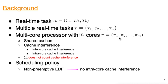A real-time task executing on a multi-core processor with shared caches exhibits two kinds of cache interference. The first is inter-core cache interference, which happens when multiple tasks execute concurrently on different cores accessing the shared cache. The second is intra-core cache interference, which occurs when a task is preempted and its data in the cache is evicted by a newly scheduled task. In our task model, the worst-case execution time does not include cache interference. We consider non-preemptive EDF as the scheduling policy. Since task execution is non-preemptive, we can avoid intra-core cache interference. Therefore, in this presentation, cache interference means inter-core cache interference.